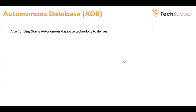Oracle Autonomous Database comes with machine learning-driven automated tuning, scaling, and patching. Autonomous Database delivers the highest performance, availability, and security for various kinds of workloads — whether it's an OLTP workload, analytics workload, or IoT workloads. It's built on Oracle Database, and Autonomous Database is available on OCI for shared and dedicated deployments.